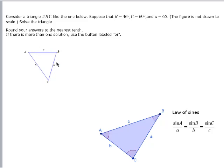Consider triangle ABC below. Let's say B is 46, so let's write that in. Angle B is 46 degrees. Angle C is 60 degrees, so this right here is 60 degrees. And it says side A is 65. Those are the information they give us right here.